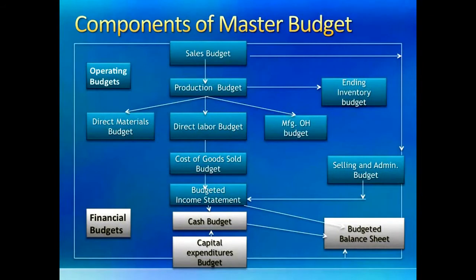Let us take a look at interrelationships between different budgets. All planning begins with a sales budget, which shows what the company expects to sell and at what price. All other parts of the master budget are based on the sales budget. The production budget is prepared next. Since manufacturing companies have inventories for various reasons, a company's sales budget need not equal its production budget. The production budget shows the number of units that must be produced in the budget period. Once we know how many units must be produced, we can prepare direct material, direct labor, and manufacturing overhead budgets, which help us prepare budgets for ending inventory and cost of goods sold.